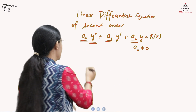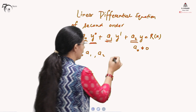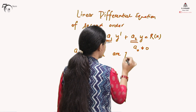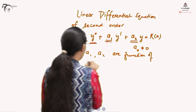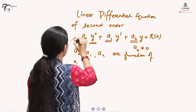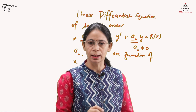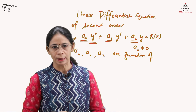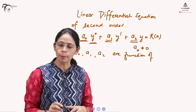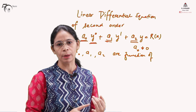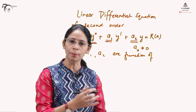If any of A0, A1, or A2 are functions of x, this differential equation will be called a second order differential equation which is linear in nature with variable coefficients. Remember, A0, A1, A2 cannot be functions of y. Either they may be constants or they may be functions of x only, because otherwise it will become non-linear. This we have already explained in our previous videos.